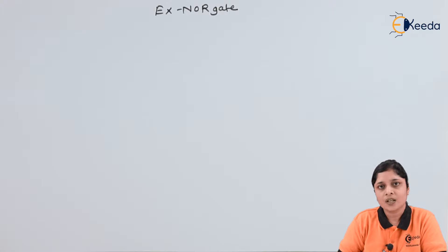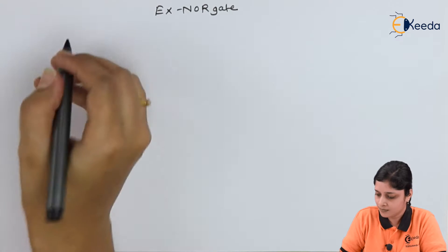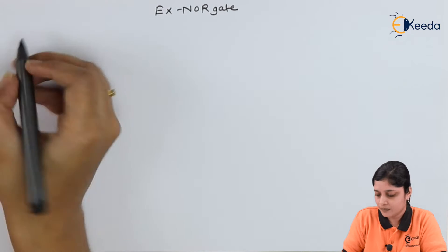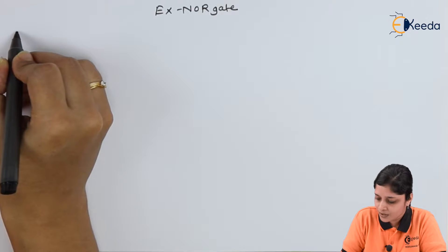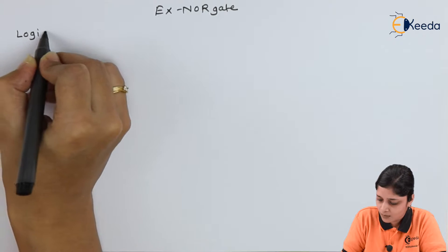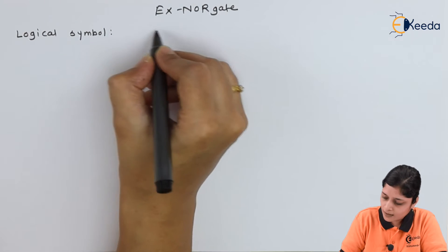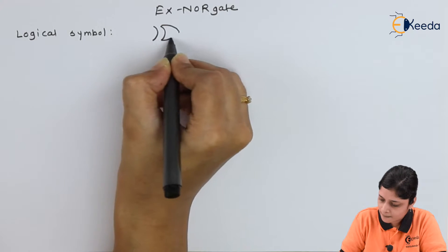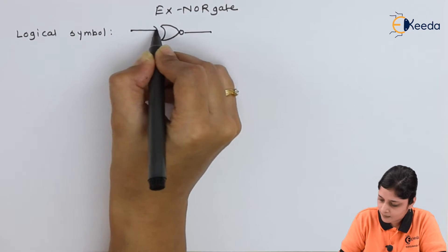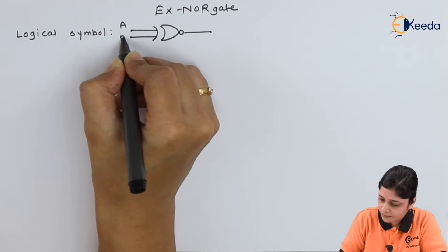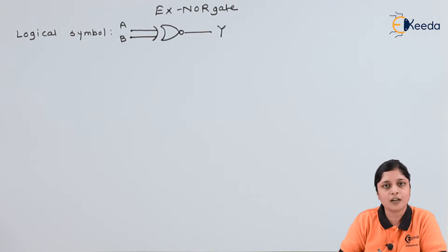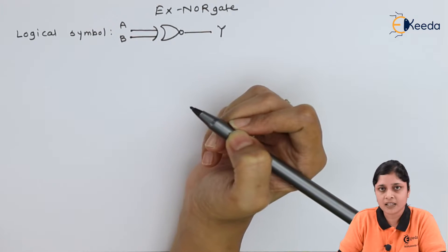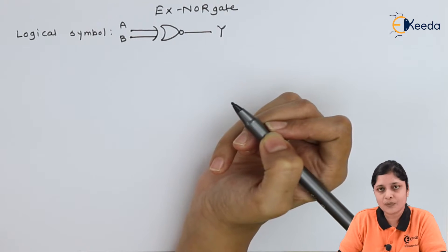The heading is XNOR gate — it is a type of derived gate. We will discuss the logical symbol of the XNOR gate. The logical symbol has A and B as inputs and Y as the output. There are two inputs and one output.